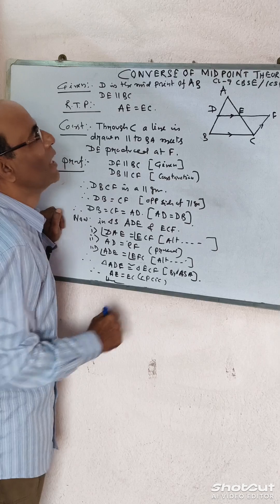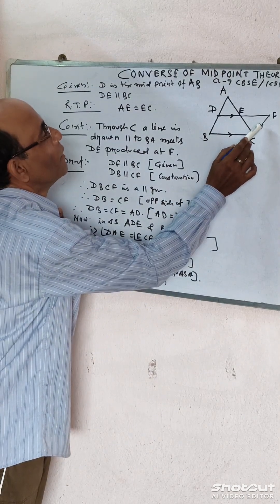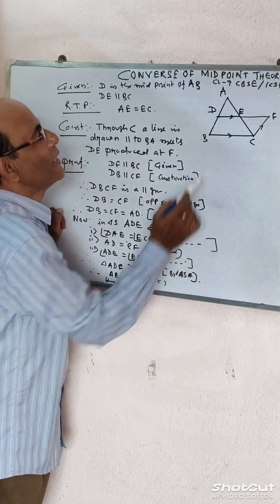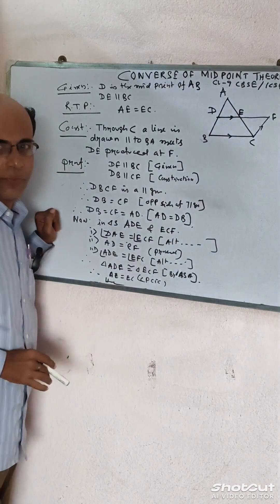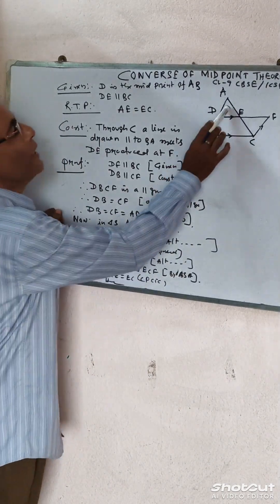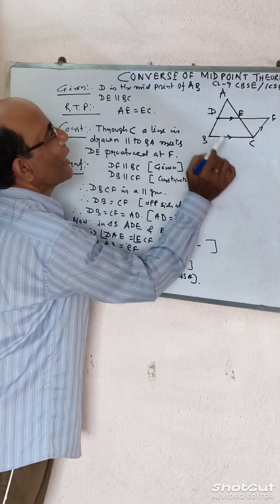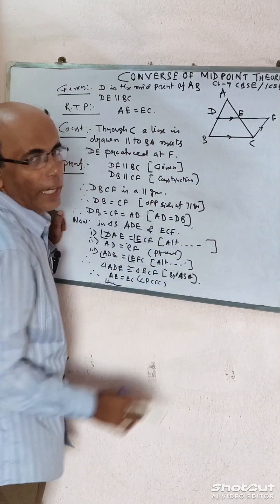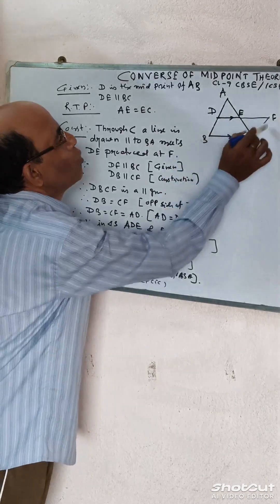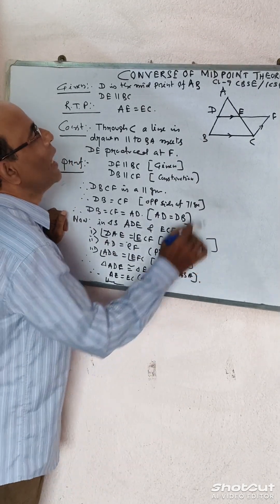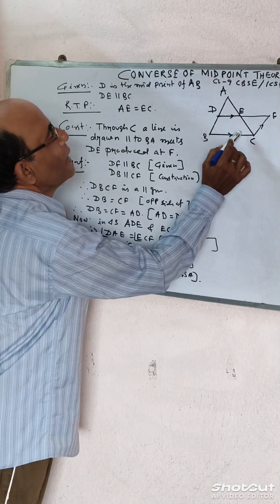It is given. Now from these two statements, CF equals DB equals AD, that means AD equals CF. Now comparing these two triangles, angle BAE equals angle ECF, alternate angles. These two lines are parallel, and angle ADE equals angle EFC, alternate angles.